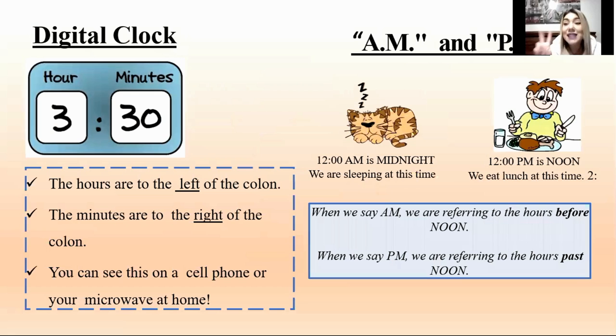El siguiente es el segundo clock. Este es más fácil que el analógico. Este es un digital clock. The hours are to the left of the colon, for example, three. The minutes are to the right of the colon, thirty in this case. So you can see this digital clock on your cell phone or in your microwave at home, in your watch, maybe, too.